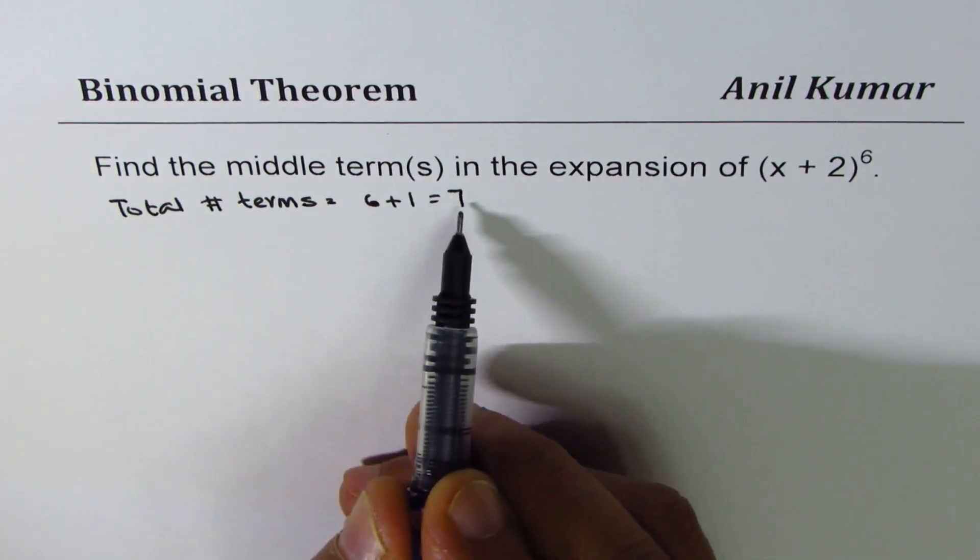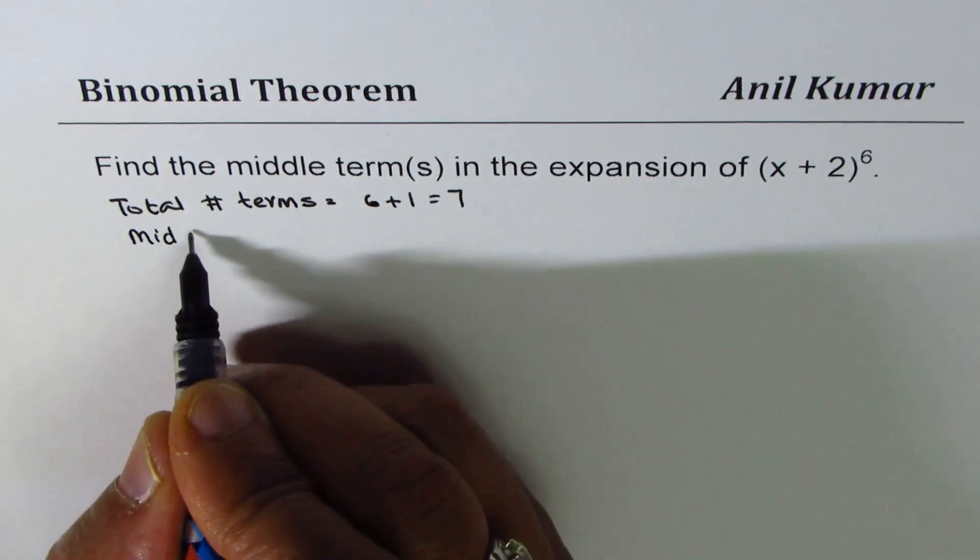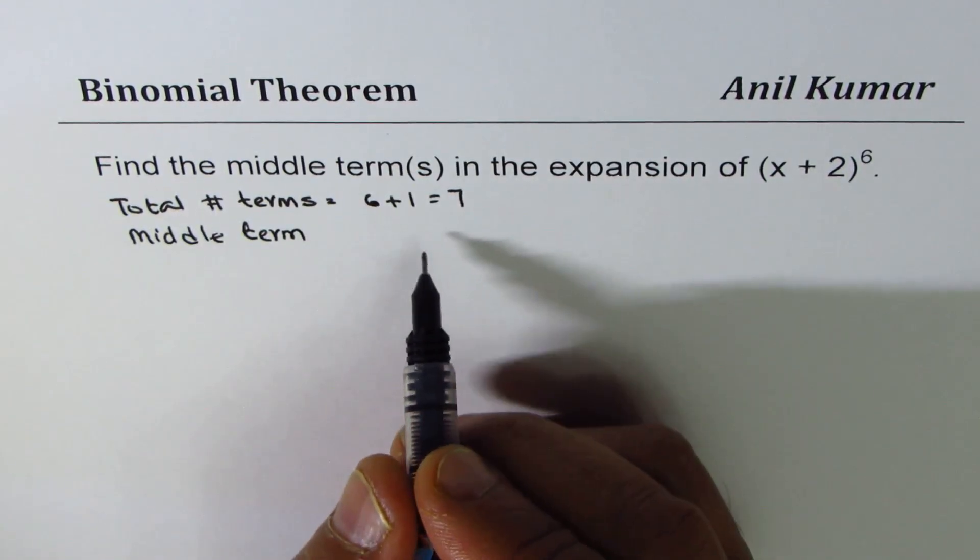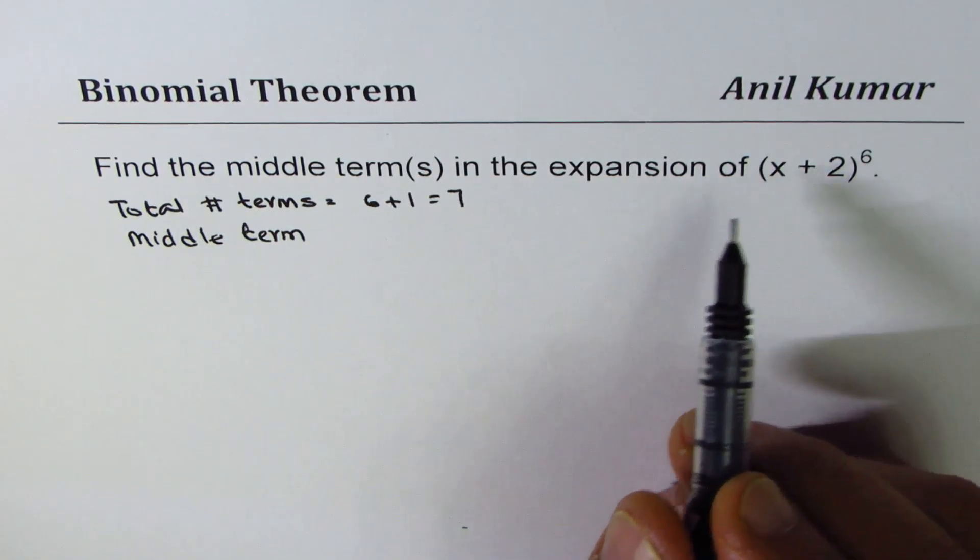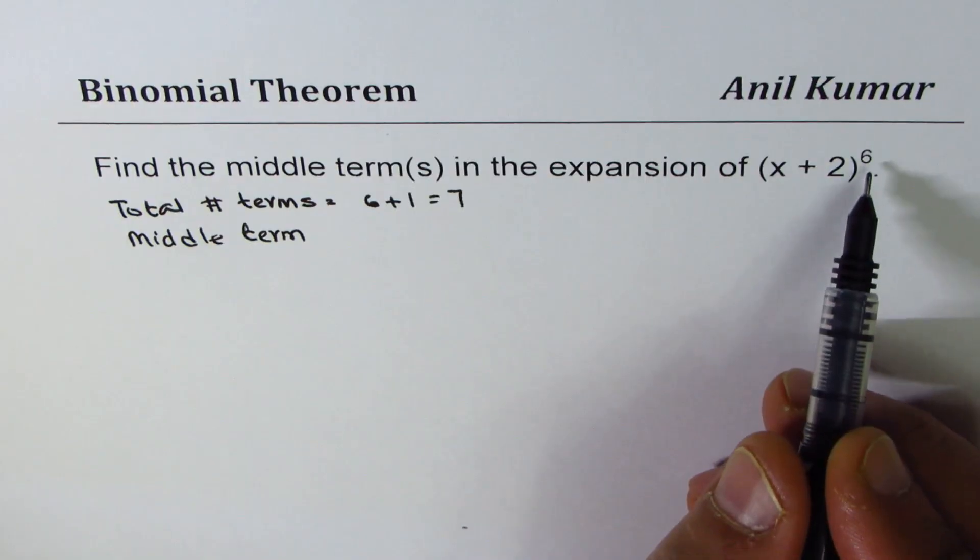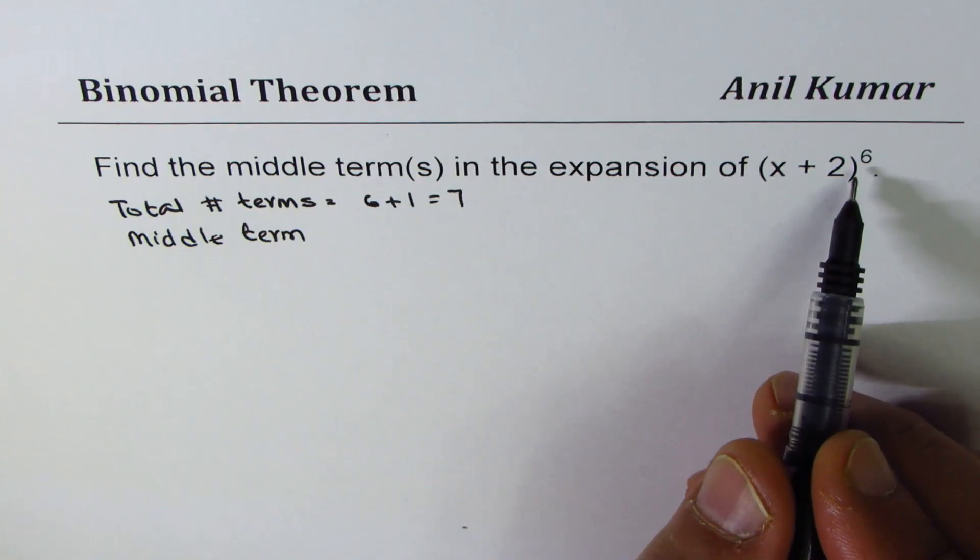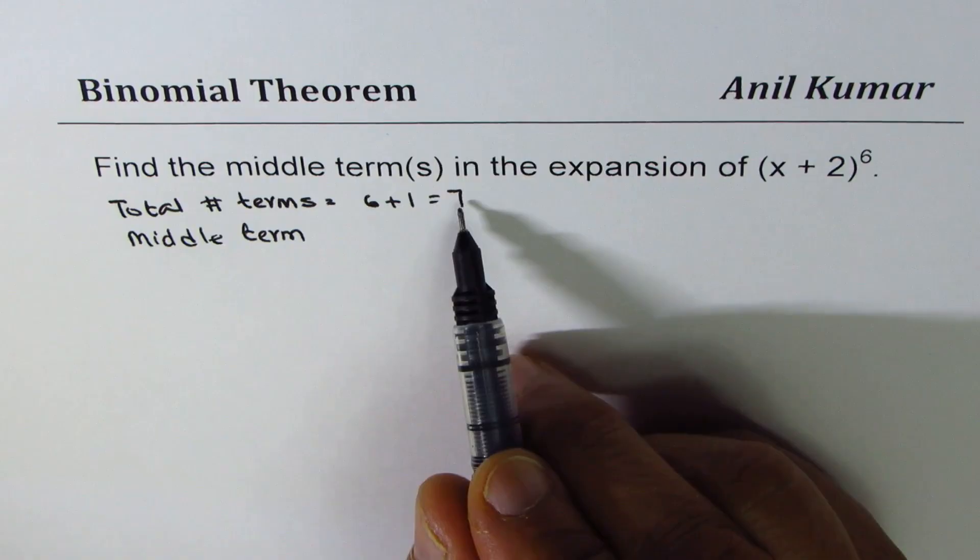Now since there are 7 terms, middle term will be 6 divided by 2 plus 1. So whenever you have even power of your binomial expansion, then there are odd number of terms, in this case it is 7.